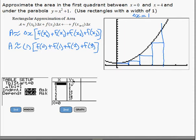So f of 0 is 1. And we can plug in all those values. So f of 0 is 1 plus f of 1 is 2 plus f of 2 is 5 plus f of 3 is 10.